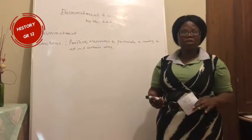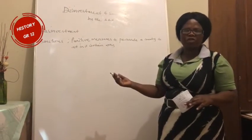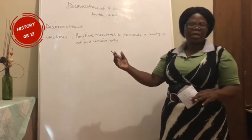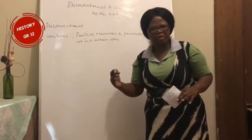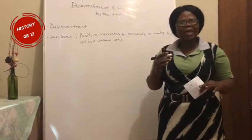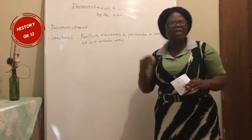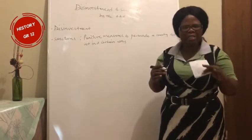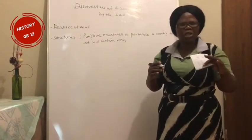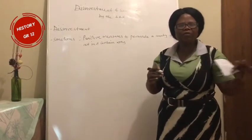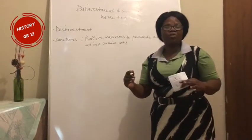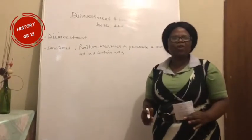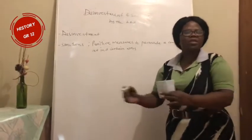Sanctions. This is a definition: it's a punitive measure — from the word 'punish' — to persuade a country to act in a certain way. In this case, to persuade South Africa to end apartheid.